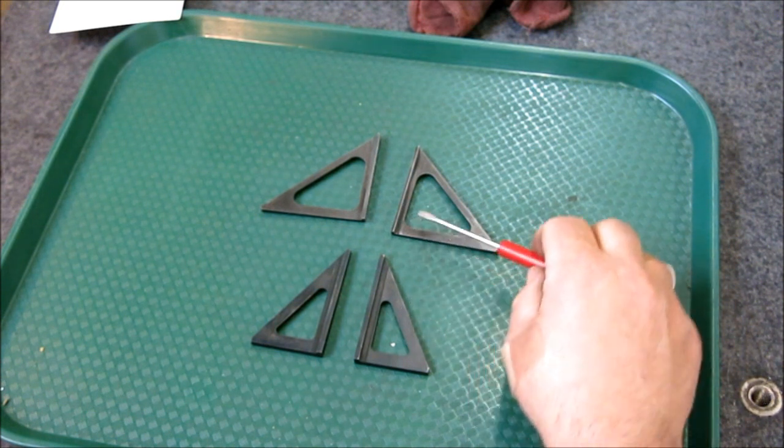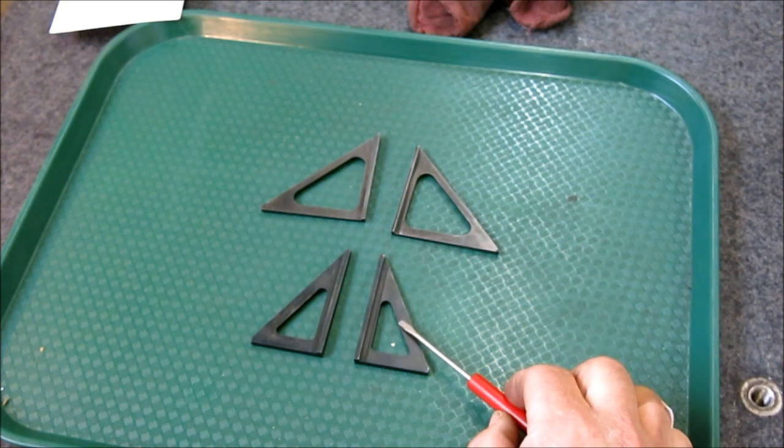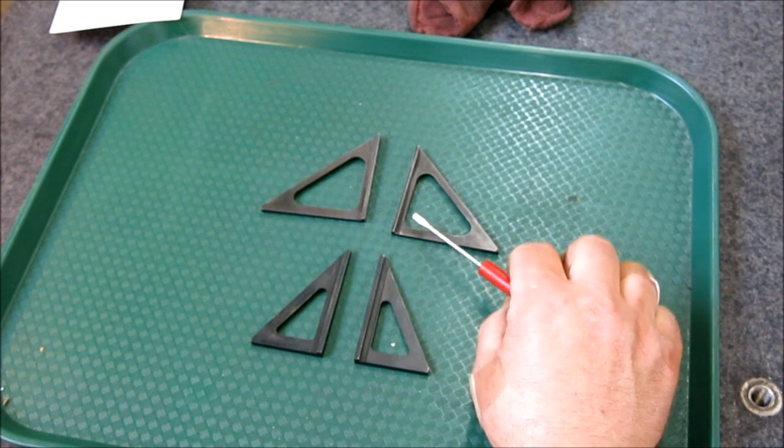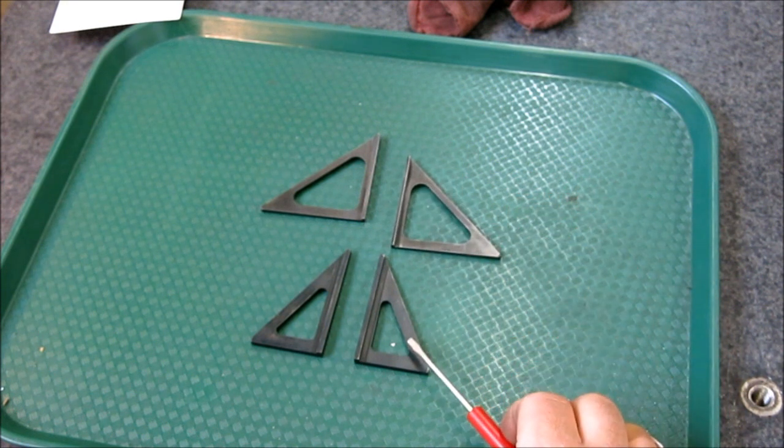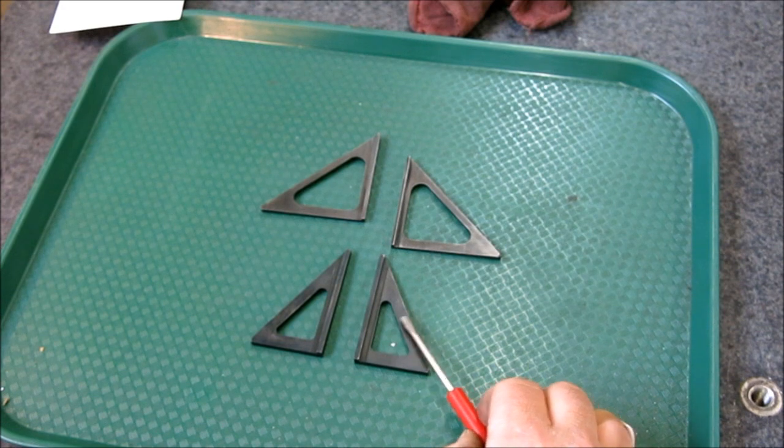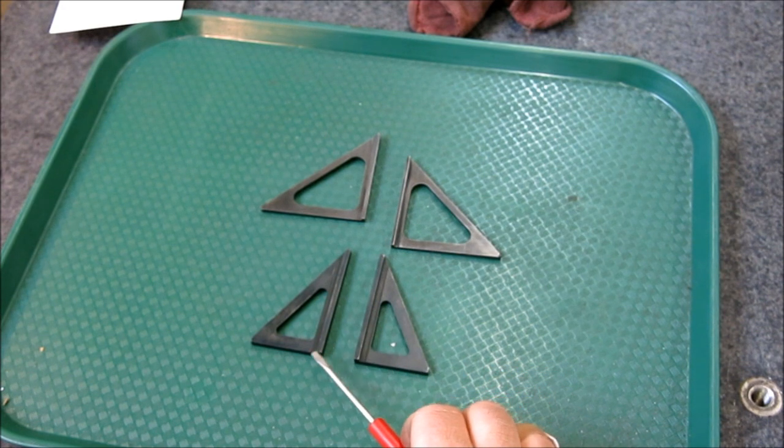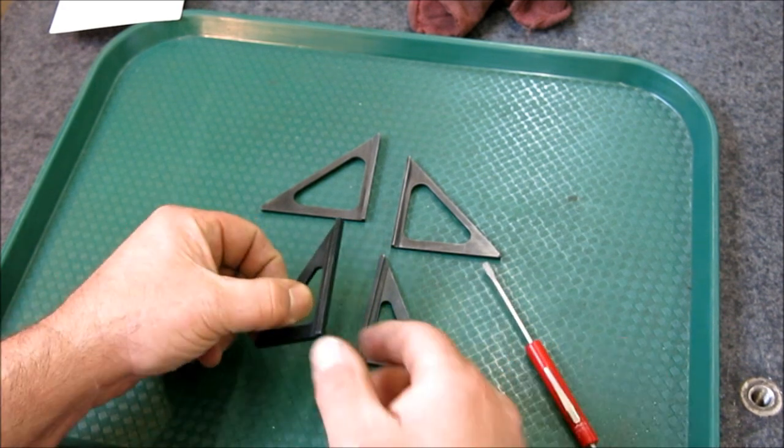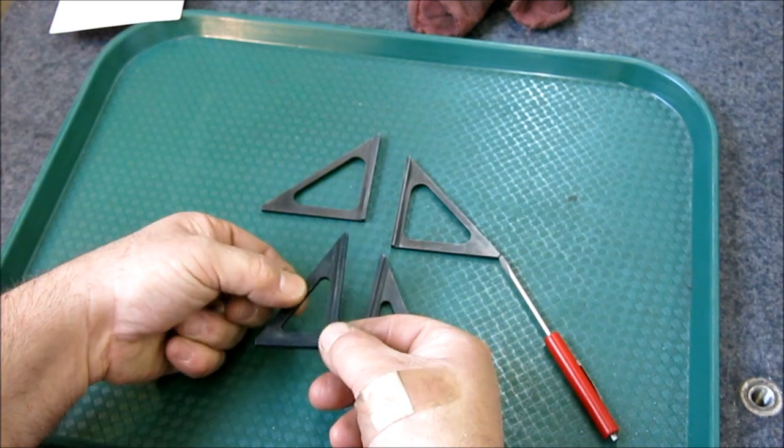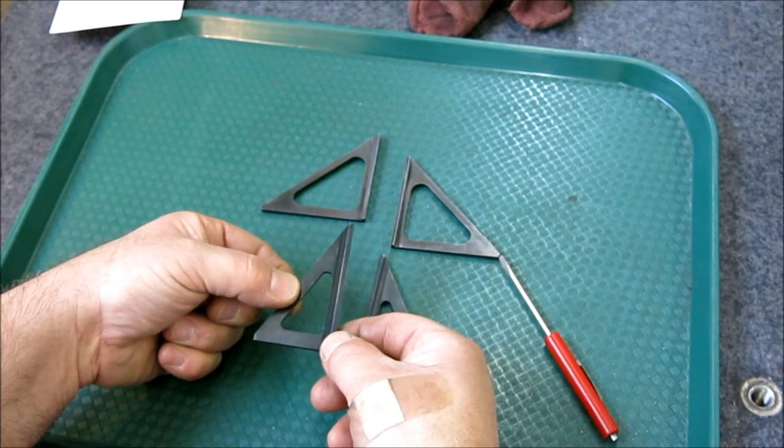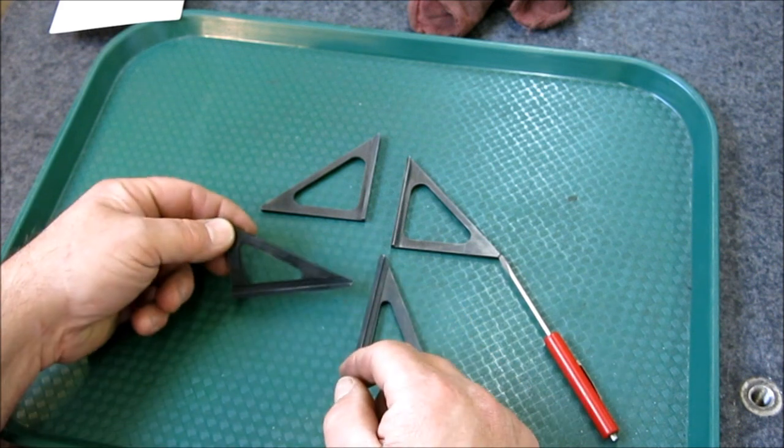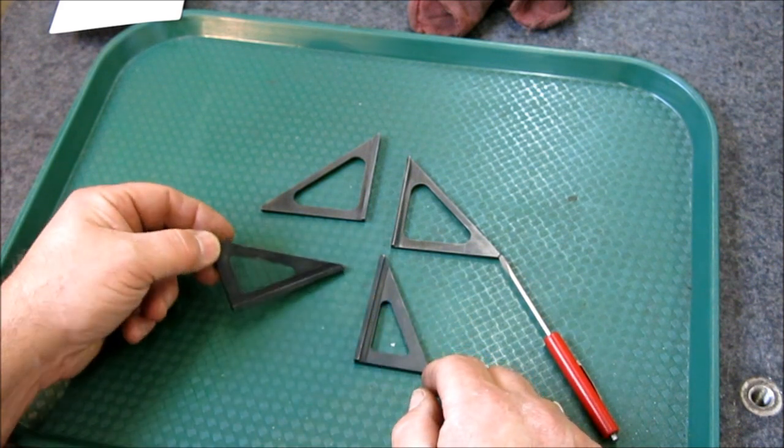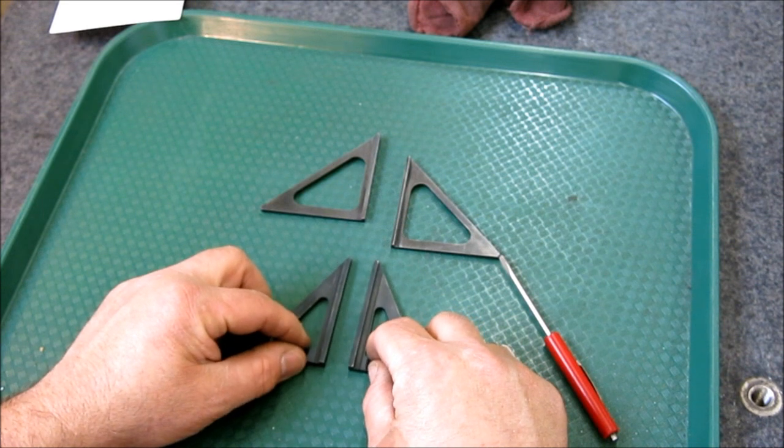He's increased the web thickness, and so I guess these were moving around a little bit in heat treat and giving him some trouble when he was grinding them. So he increased the web thickness a little bit, and I think that's solved his problem. And it gives a little bit more of an edge to clamp to when you're doing a setup. So anyway, now I got these 30-90s, or 60-90s, whichever your angular reference is.